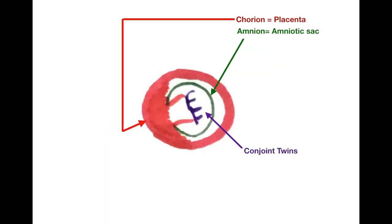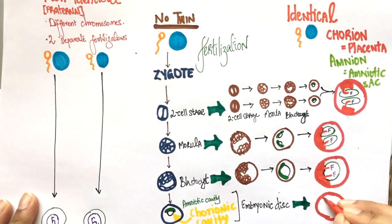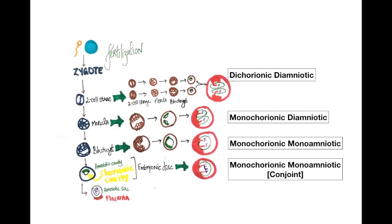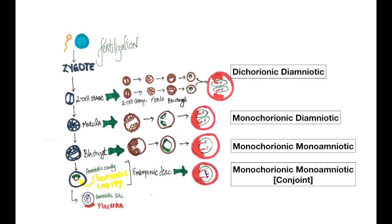Conjoined twins are formed when the cleavage takes place after the formation of the embryonic disc. So, twins that split early are more independent.